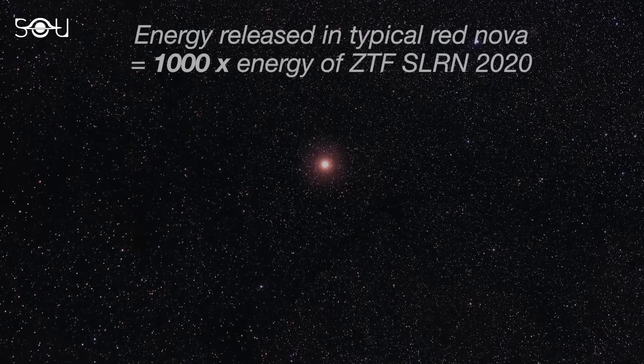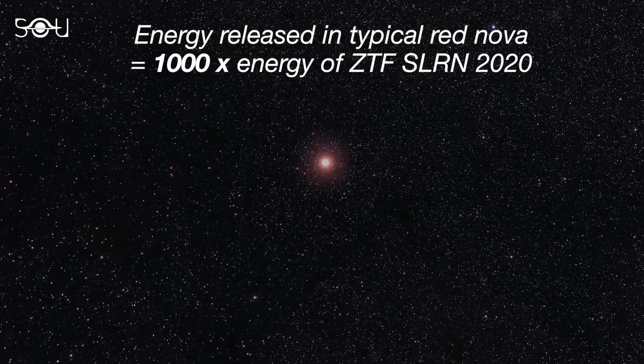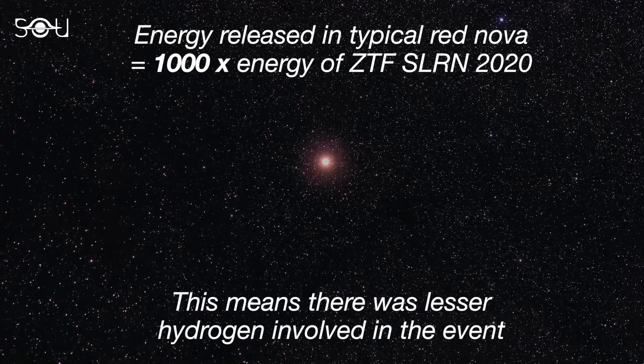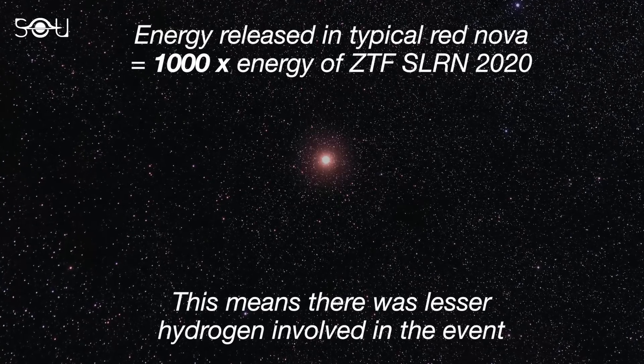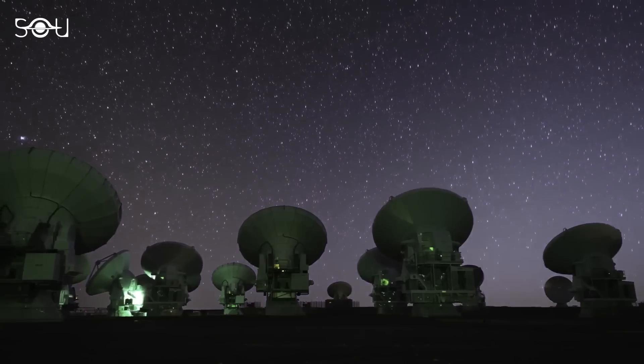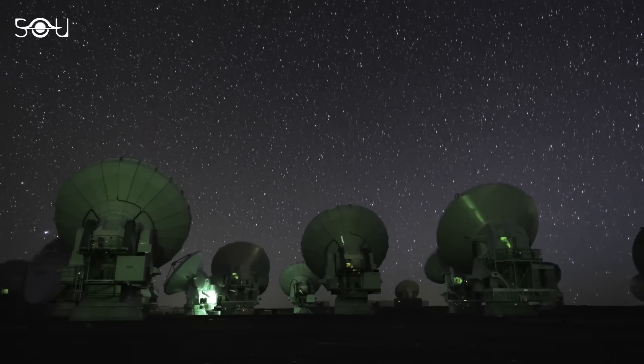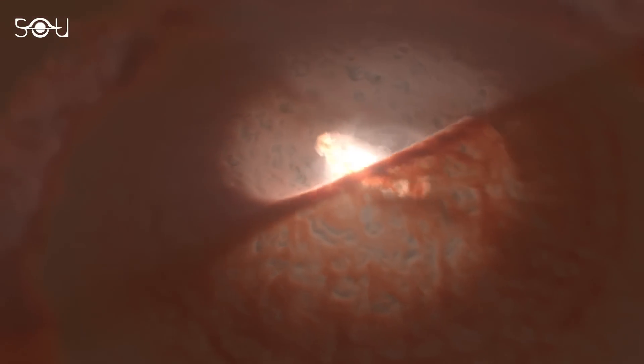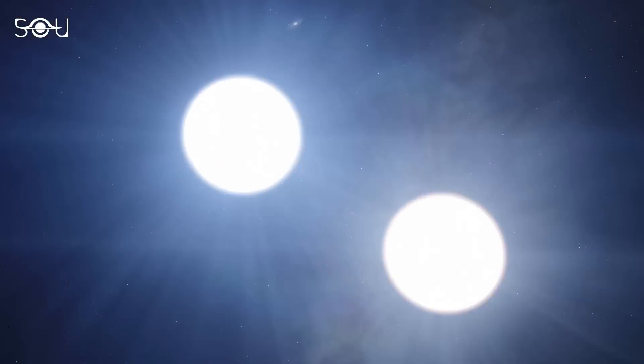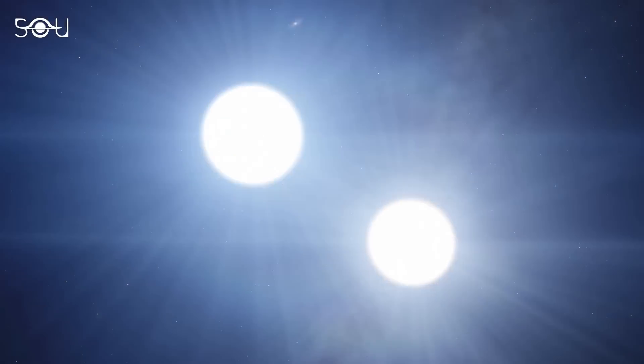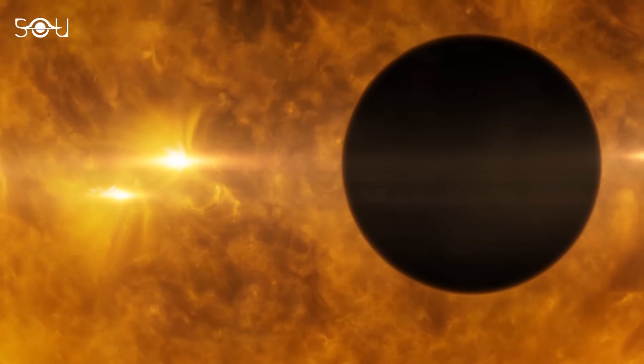The total energy observed in typical red novae was about 1,000 times greater than the energy released by this star since its initial outburst. The relatively low luminosity of ZTF SLRN 2020 could be due to a small amount of hydrogen released during the outburst, which was undetectable in follow-up observations by radio telescopes, the submillimeter array and the very large array. This discrepancy in energy release suggested the event was not a red nova after all, considering the energy was 1,000th of that typically seen in star mergers. Astronomers concluded the merging object must be 1,000 times smaller than the star.